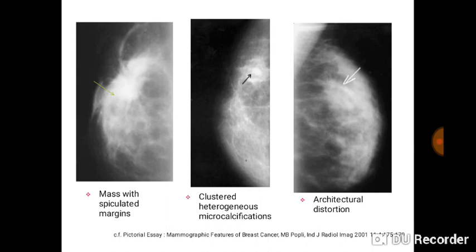You can see examples of findings on mammograms. The first one is that of a spiculated mass — the margins are sharp and irregular. The second one shows clustered heterogeneous micro-calcifications. And then you have architectural distortion on the third image.